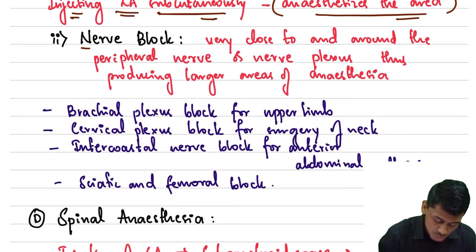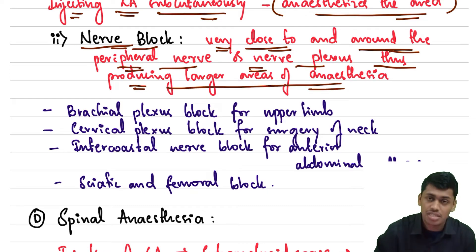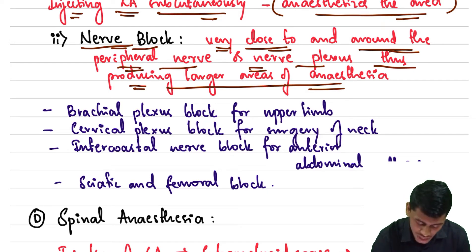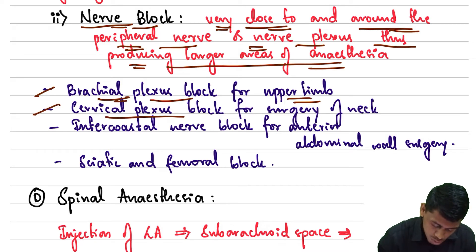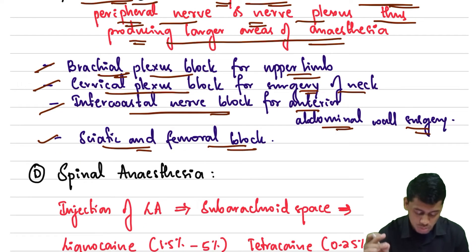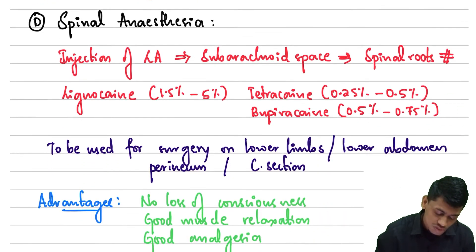The next important technique is the nerve block. Here, the local anesthetic is given very close to and around a peripheral nerve or nerve plexus, producing larger areas of anesthesia. Examples include the brachial plexus block for the upper limb, cervical plexus block for neck surgery, intercostal nerve block for anterior abdominal wall surgery, and sciatic and femoral nerve blocks.